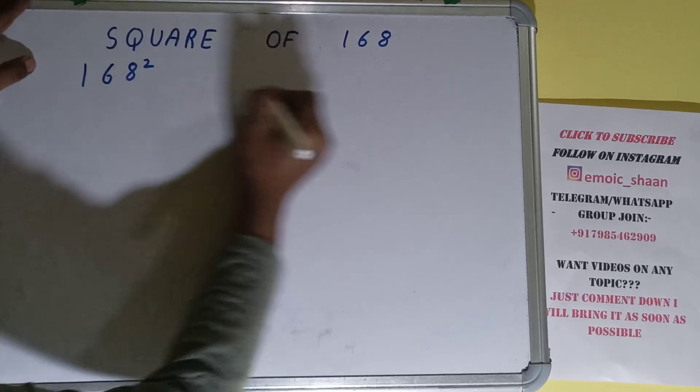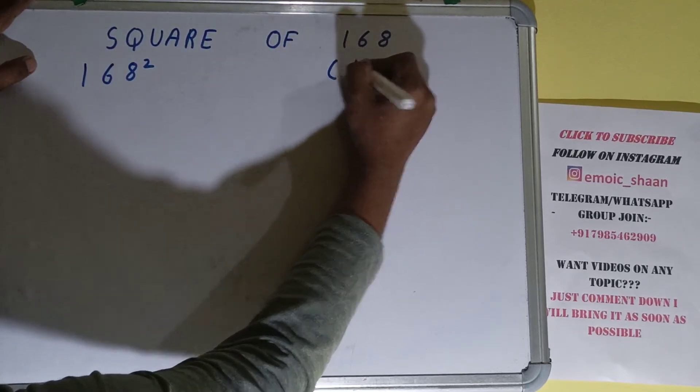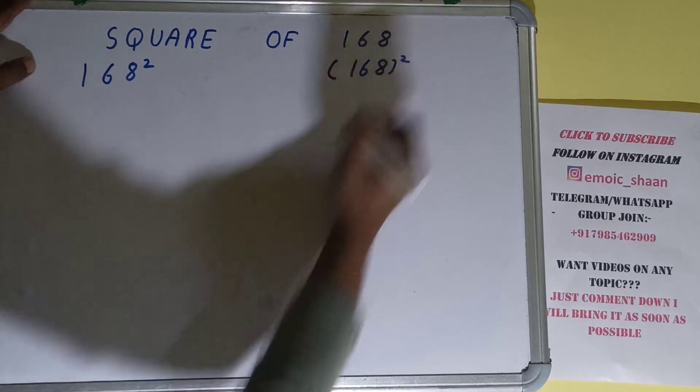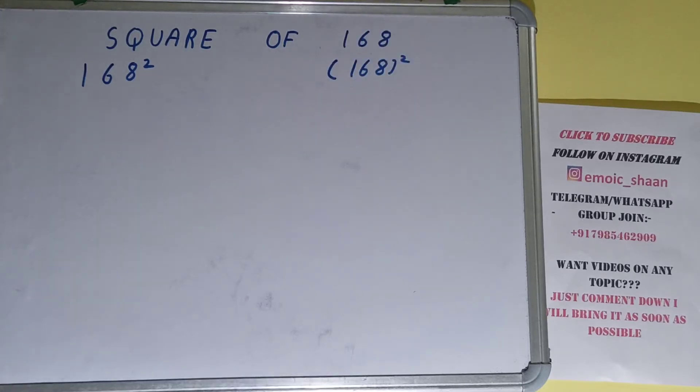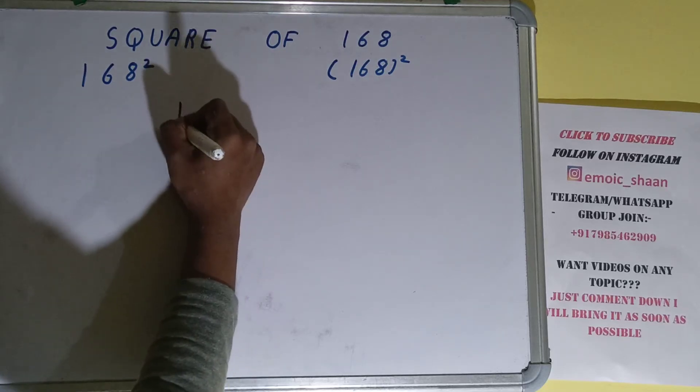raised to the power 2, or inside bracket 168 outside 2. These all have one and the same meaning - that is, we need to find the square of 168. Now moving on to the solution.